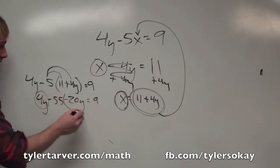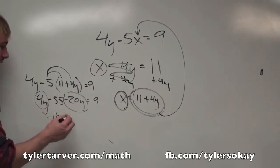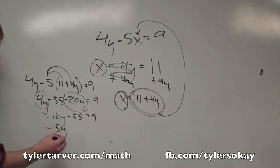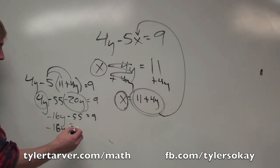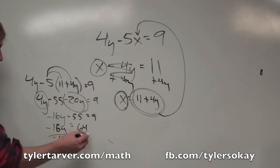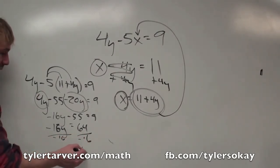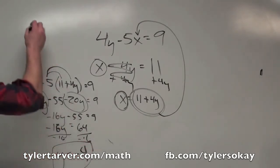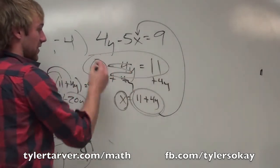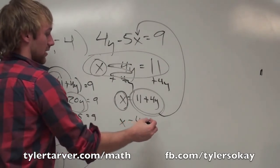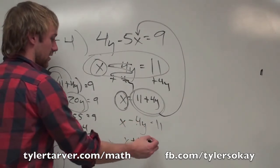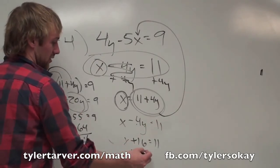Combine like terms: 4 minus 20 is negative 16y, minus 55 equals 9. Add 55 to both sides to get negative 16y equals positive 64. Divide by negative 16, so y equals negative 4. To find x, plug negative 4 into x minus 4y equals 11: negative 4 times negative 4 is positive 16, so x minus 16 equals 11, and x equals negative 5. These two lines cross at (negative 5, negative 4).